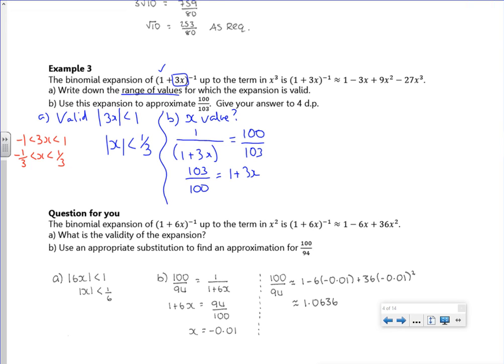So if I take the 3 away, I've got 3 over 100 is 3x. So I'm going to say that I'm going to use an x value of 1 over 100. So that's the x value I'm going to use.